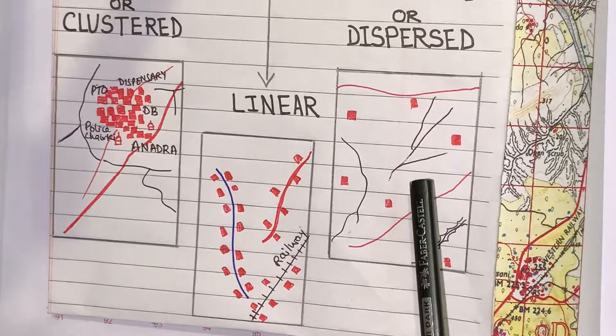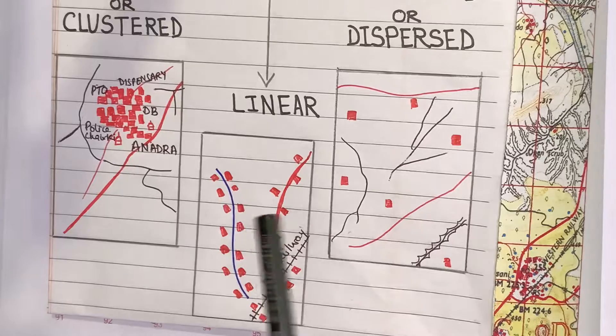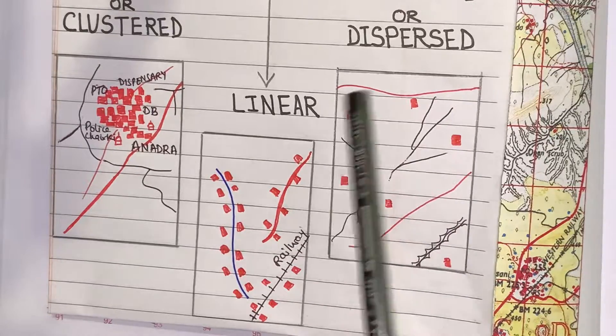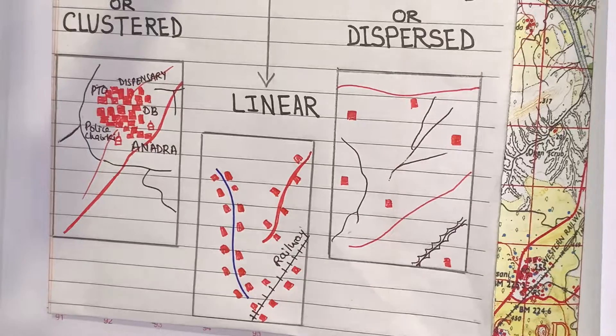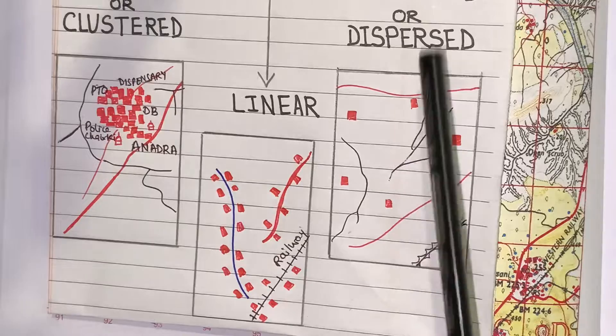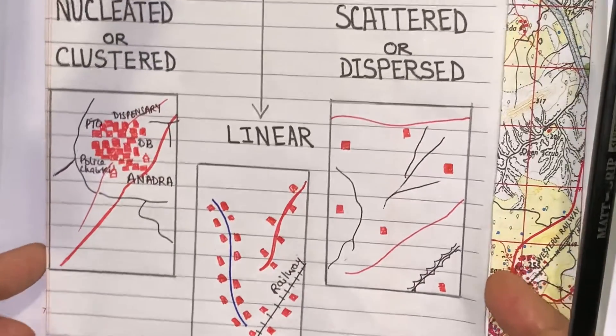Third one, you will see this is also different from the previous two. Here, only few huts are there in this box. And all those are also separated from each other. They are scattered from each other. This is the scattered or dispersed settlement.